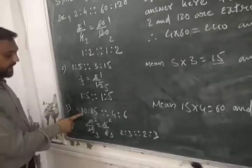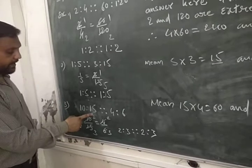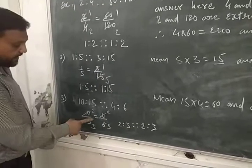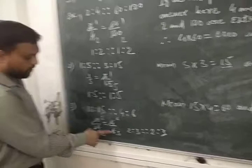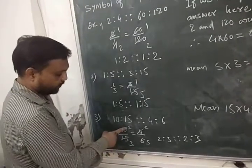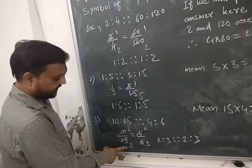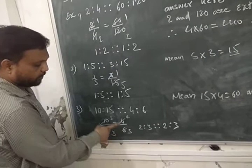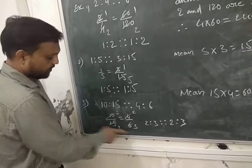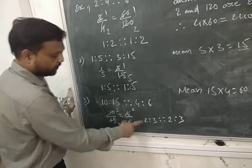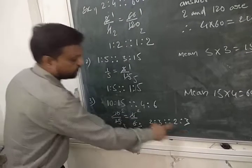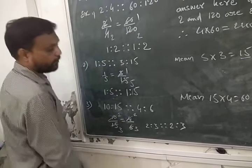Third example: ten is to fifteen, proportion to four is to six. Ten upon fifteen equals four upon six. These both are going to be reduced — ten upon fifteen reduced by five gives two is to three, and four upon six reduced by two gives two is to three. Both ratios are two is to three, it means these are in proportion.